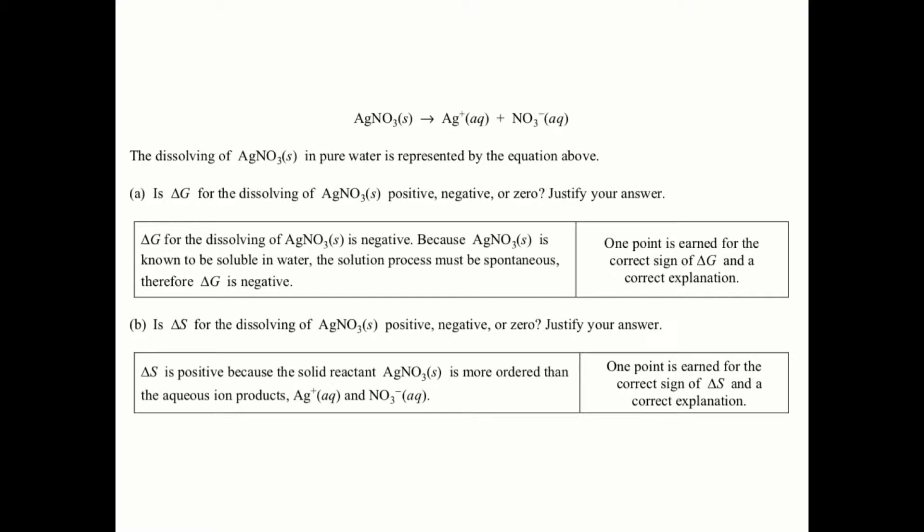For this problem, silver nitrate is dissolving into pure water. The question asks: is delta G for the dissolving of silver nitrate positive, negative, or zero? Is this spontaneous or not? Remember all nitrates are soluble, which tells me this dissolving is going to be spontaneous, which means delta G is going to be negative because silver nitrate is always going to be soluble in water. Therefore, it's a spontaneous process or thermodynamically favorable.